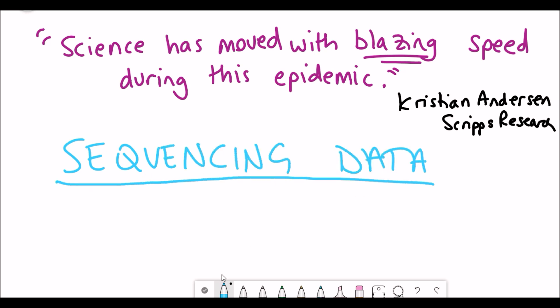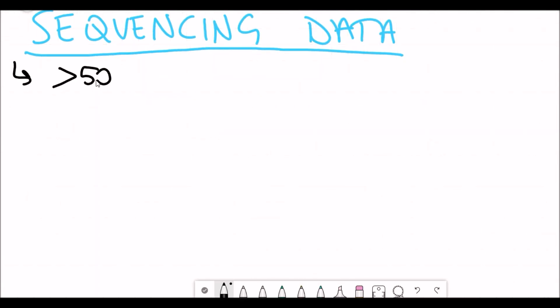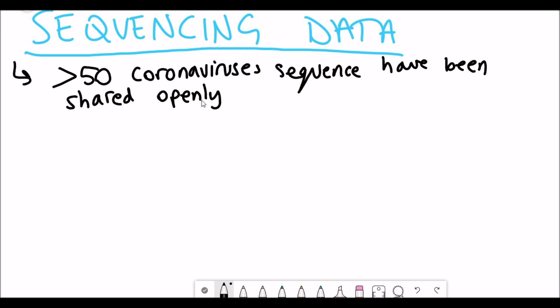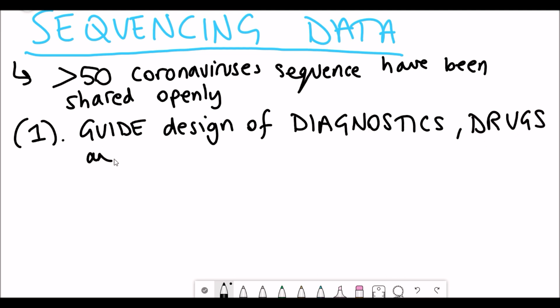We now have more than 50 sequencing data of different coronavirus strains that have been found in different patients. And this information is so valuable for being able to work out how the disease is spreading and to be able to guide the design of diagnostics, drugs, and vaccines.